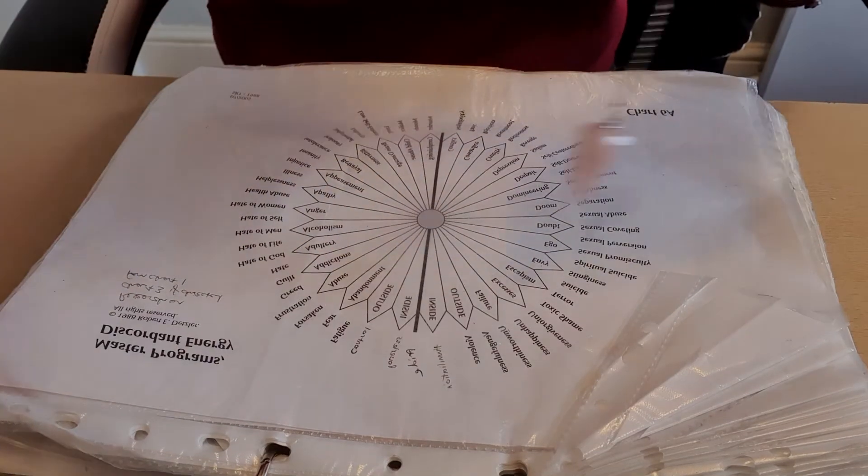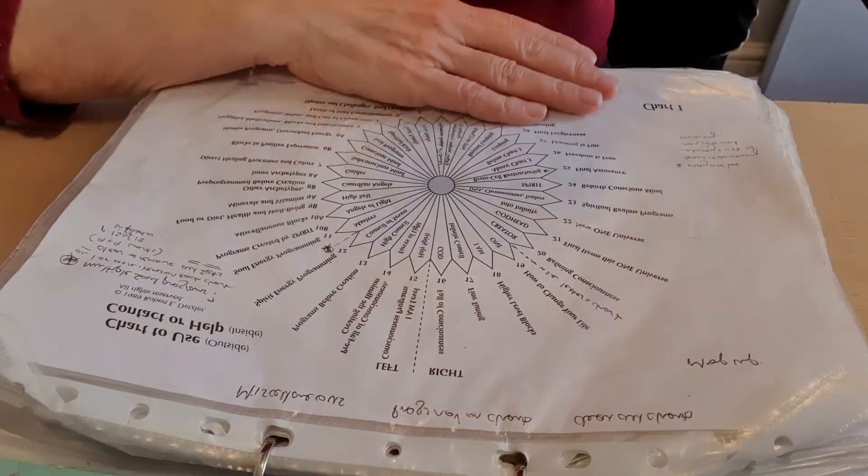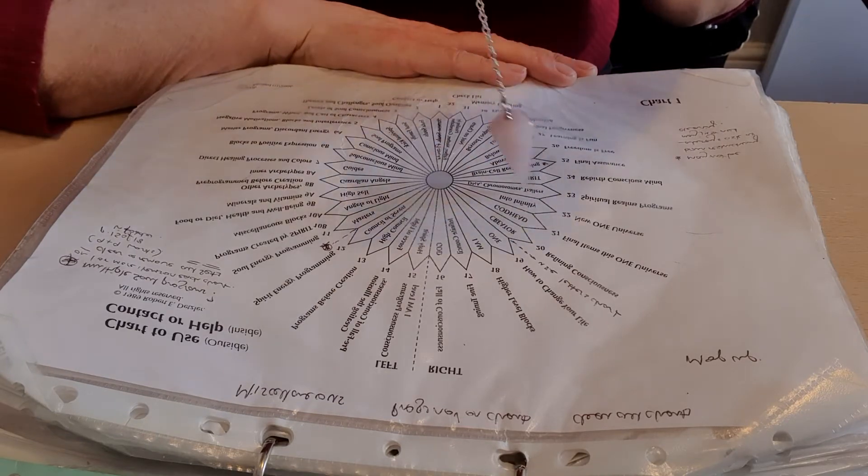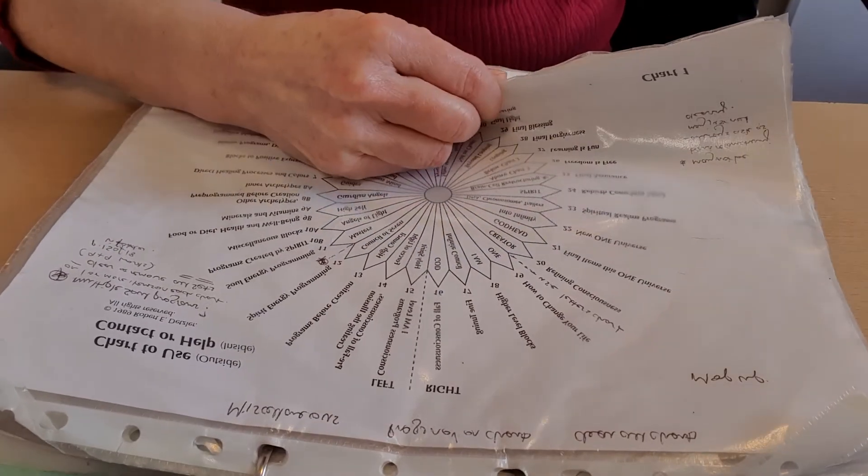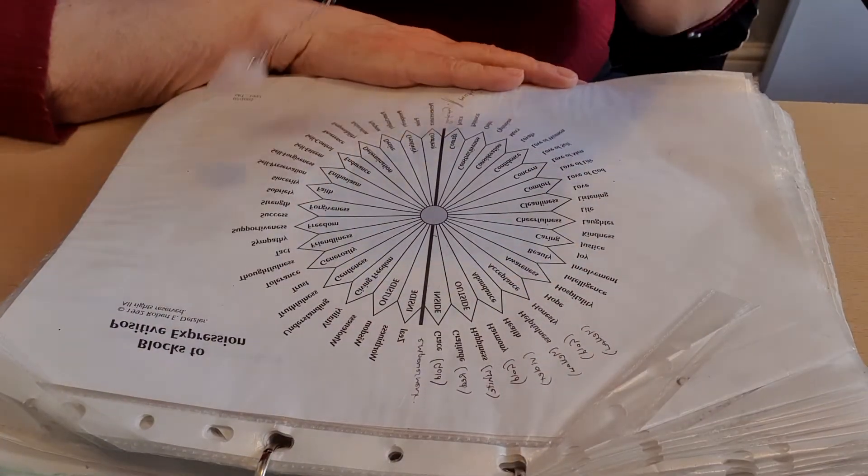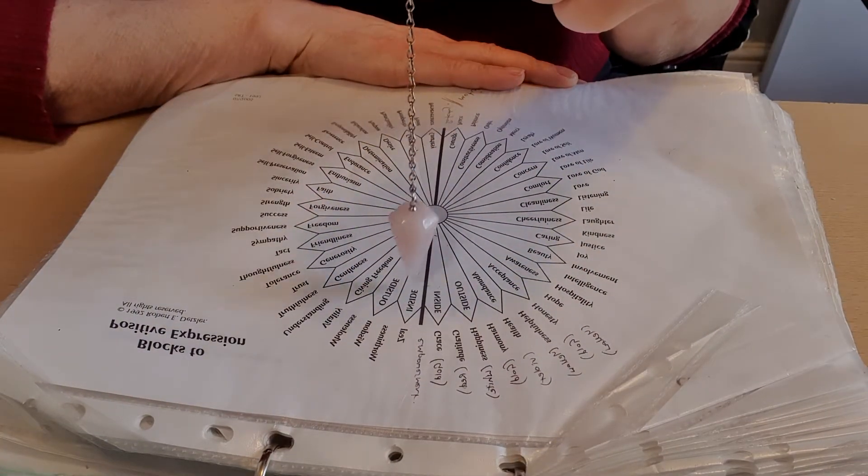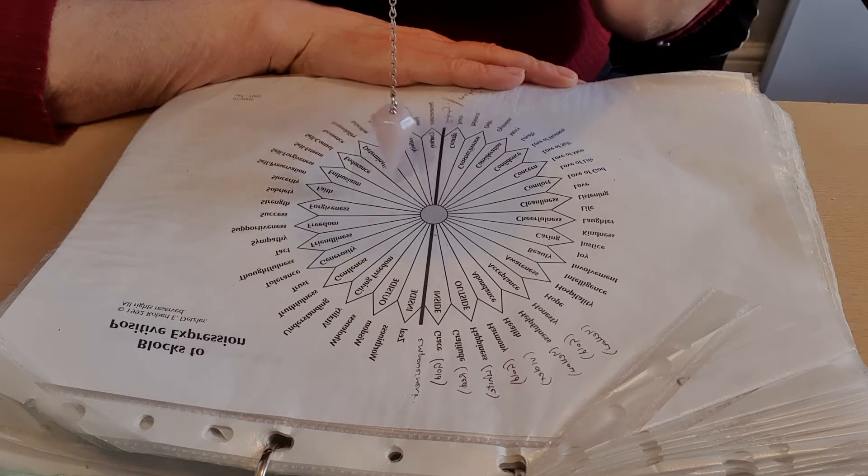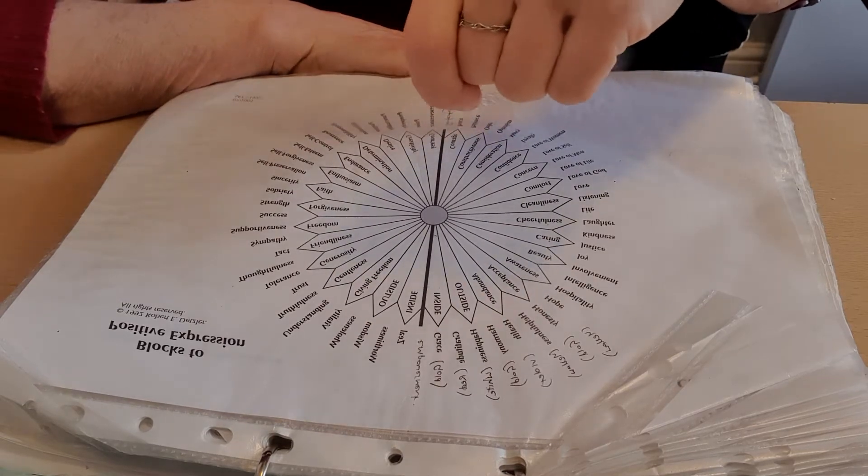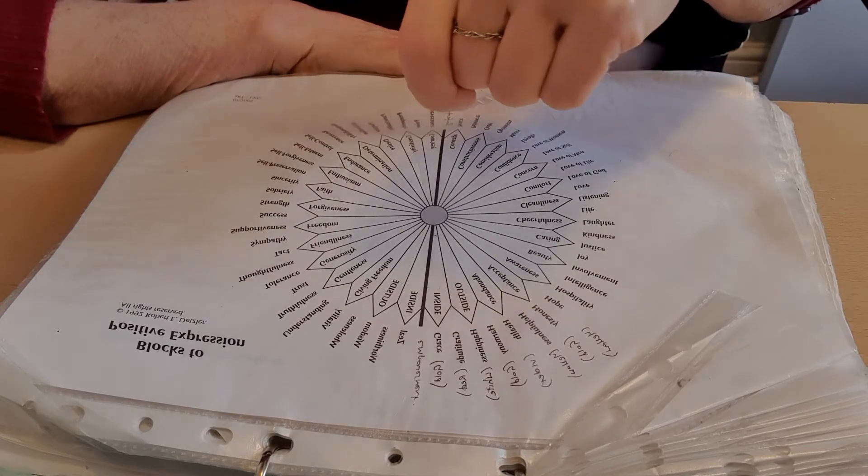There we go. So I hope you remember to set your intention to receive the benefits of this clearing for your highest good at the start of this. I forgot to remind you, but hopefully you'll remember if you've seen my other videos. Inside left, we have blocks to endurance. Let's clear all blocks to endurance. These are blocks to positive expression, so we're clearing that away as well.